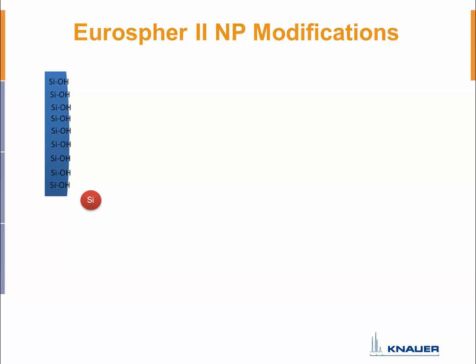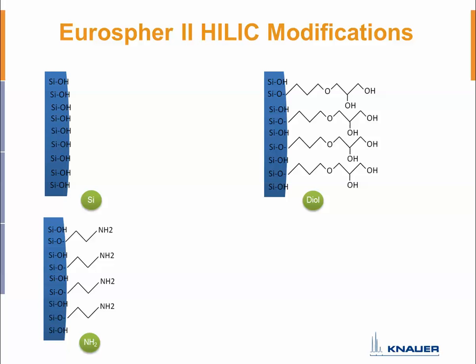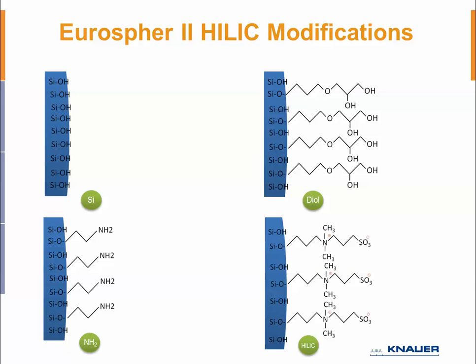Now let's have a short look at normal phase columns. In normal phase mode, you typically use bare silica gel phases, diol phases, amino phases, or cyano phases. In normal phase, you use hydrophobic eluents and your molecules interact with these polar phases — the reverse of reversed phase mode. HILIC columns use nearly the same stationary phases as normal phase, but with a completely different eluent, exploiting the hydrophilic interactions of analytes with the phase and with an aqueous layer on the phase. Knauer also offers a zwitterionic phase for HILIC mode.